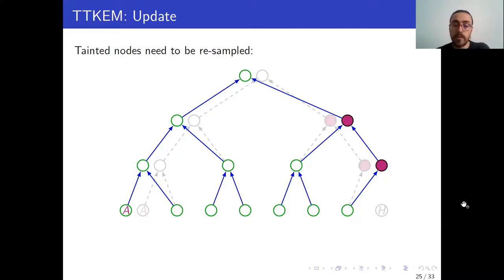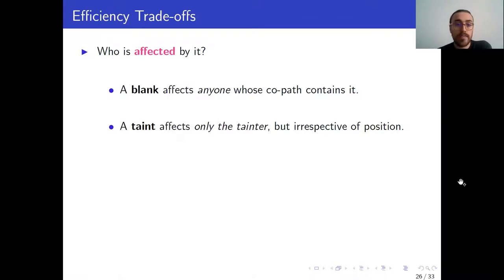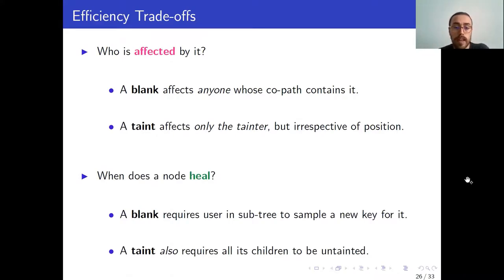I refer you to the paper for the full details of the protocol, but let me just give you an overview of the efficiency. So at first sight, it's not clear which of the two schemes might be more efficient, because they affect communication in a different way. So a blank will affect anyone whose co-path contains the blank. So whenever I need to encrypt to a blank node, I will need to encrypt to more nodes. A taint, however, affects only the tainter, since they are the only ones that will need to rotate the key of that tainted node, but this is irrespective of their position in the tree. The second aspect is healing. So a blank can heal when a user in the appropriate subtree samples a new key for it. This condition, however, is not enough for tainting, which also requires that all its children have been untainted. So healing is slower in Tainted TreeKEM.